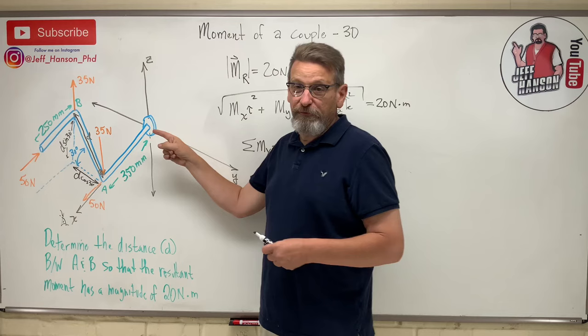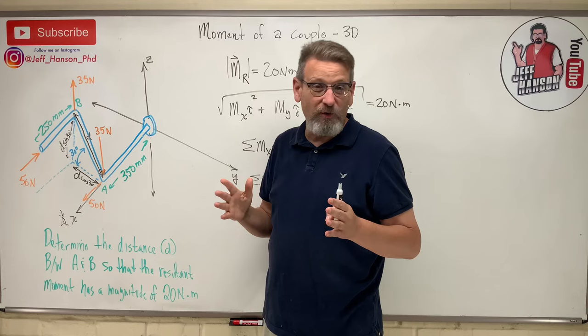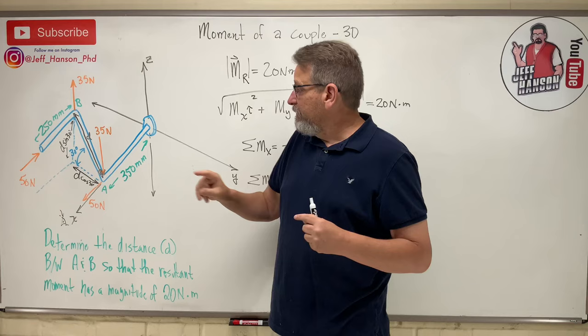Well, one of the 35s rotates you counterclockwise, but the other one rotates you clockwise, and so the 35s wind up canceling each other out. They don't make any moment around the y. Each one individually does, but when I add them together, this one's positive 35 times 350, this one's negative 35 times 350, and so they just fall away.